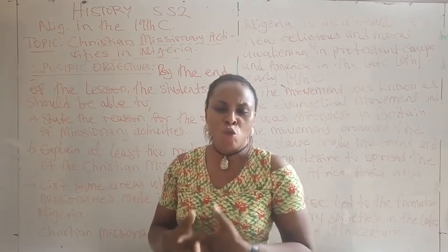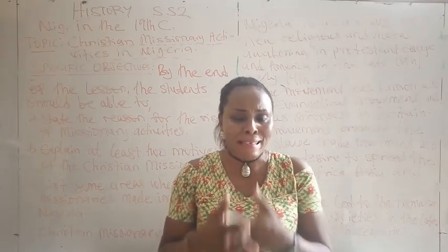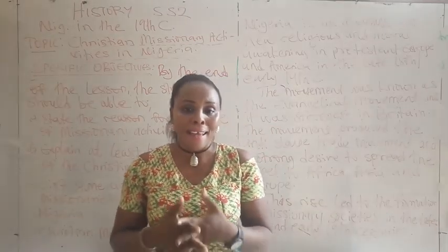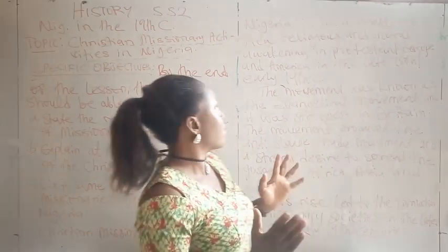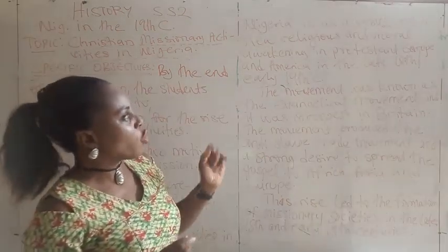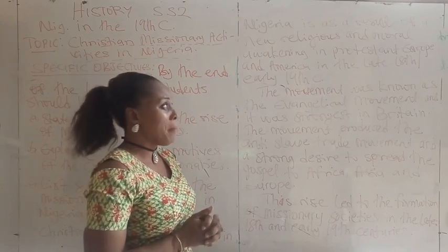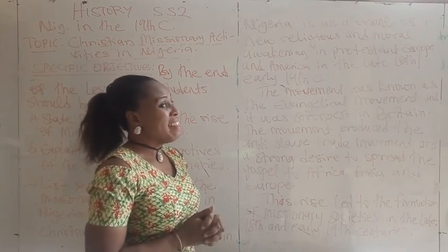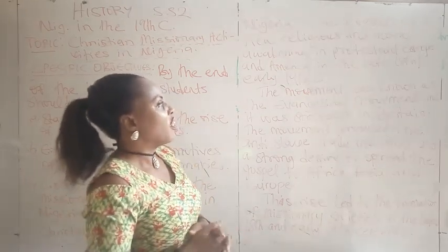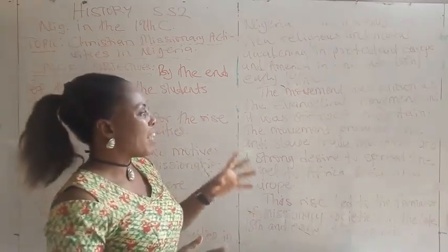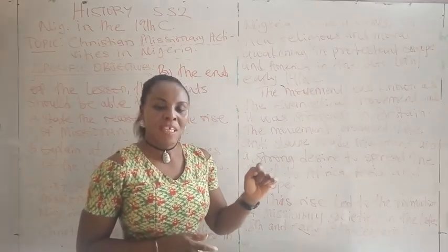Now we begin to ask, why did we have so much missionary activity in Nigeria in the late 18th and early 19th century? The reason is this: there was a religious and moral awakening in the Protestant countries of America in the late 18th and early 19th century. That movement was known as the evangelical movement, and it was strongest in Britain.